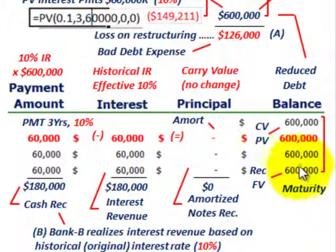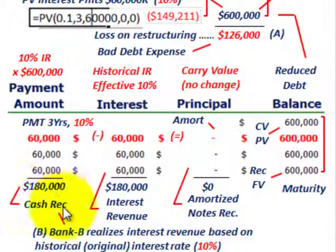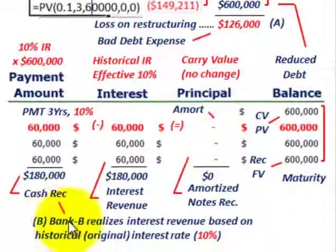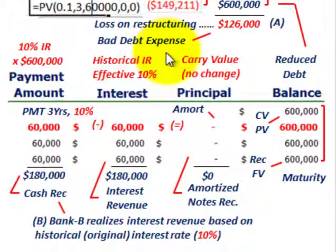At maturity, Bank B receives $600,000 from Corporation A — the same as the carrying value they started with — so zero amortization of the notes receivable is required. The total interest revenue on the income statement is $180,000, which matches cash receipts of $180,000. Bank B realizes interest revenue based on the historical or original interest rate of 10%. This covers both Corporation A the debtor and Bank B the creditor in this debt restructuring.